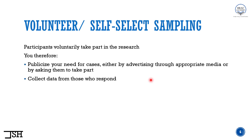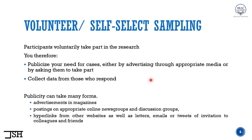What are some other ways we can do volunteer sampling? Publicity can take many forms. We can do advertisements in magazines inviting participants to take part. We can do posts on appropriate online news groups and discussion groups. We can also post hyperlinks from other websites, as well as send letters, emails, or tweets of invitation to colleagues and friends. In all of these methods, we are basically inviting people to voluntarily participate in the survey or interview — and that is why it's called volunteer or self-select sampling.